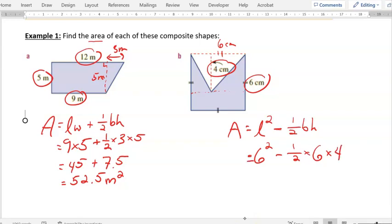So now we've got 6 times 6 is 36, minus, so we do all this together, 6 times 4 is 24, and one half of that is 12. And so the area is actually going to be 24, and what is our unit? Centimeters.